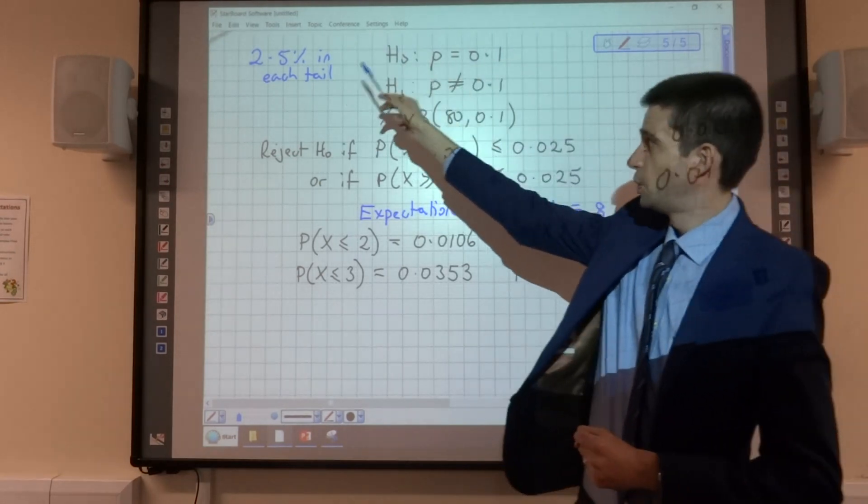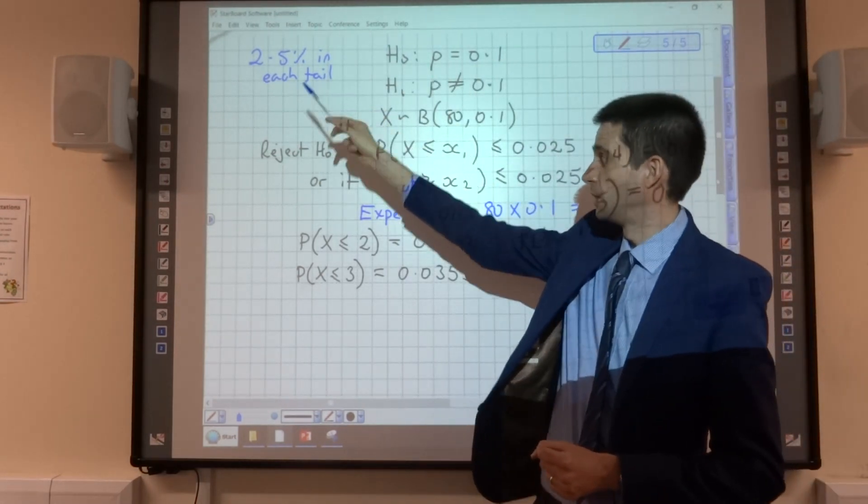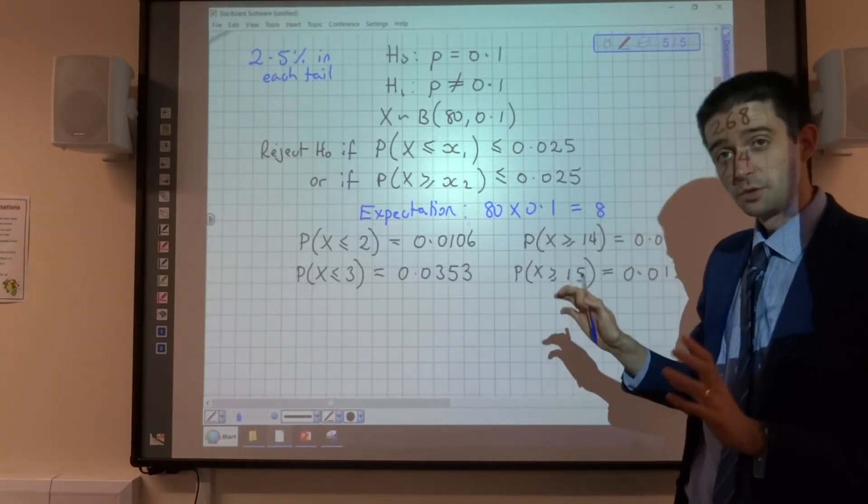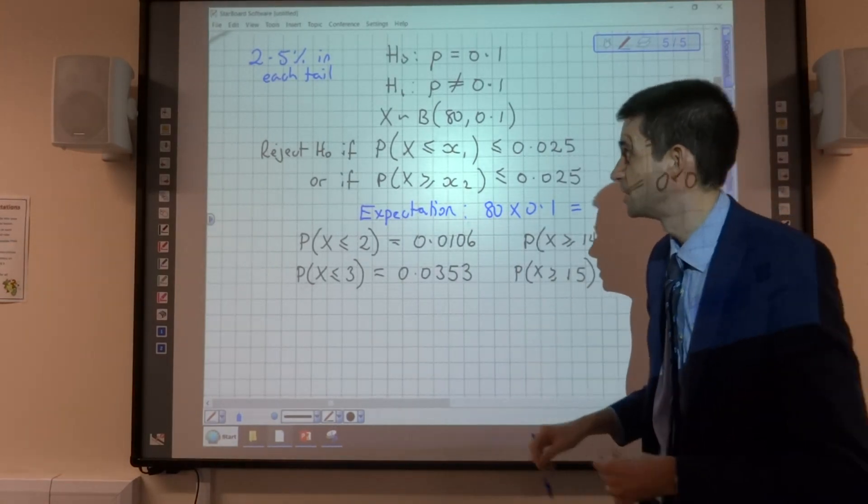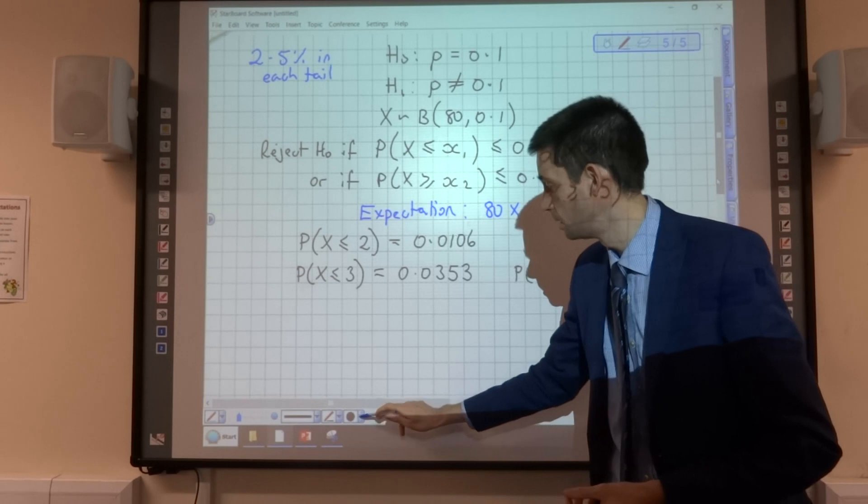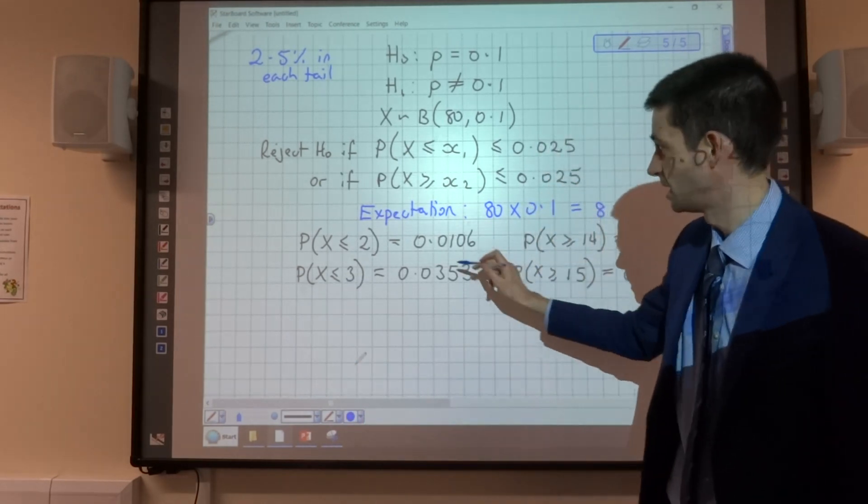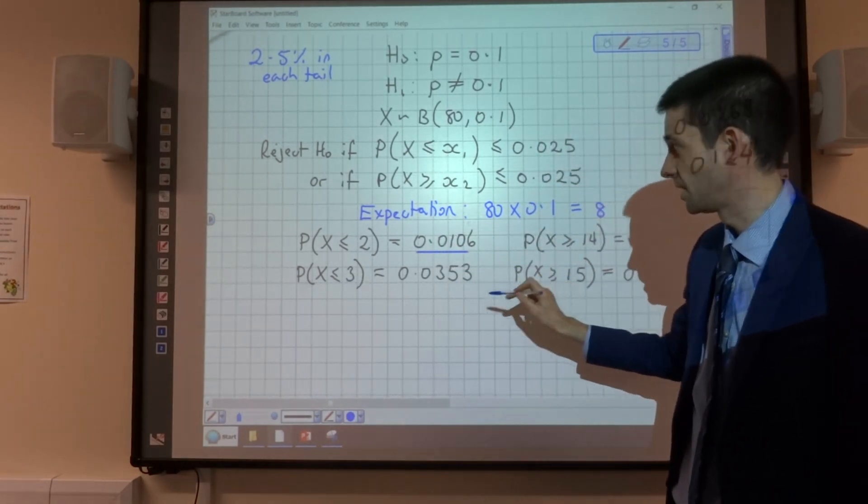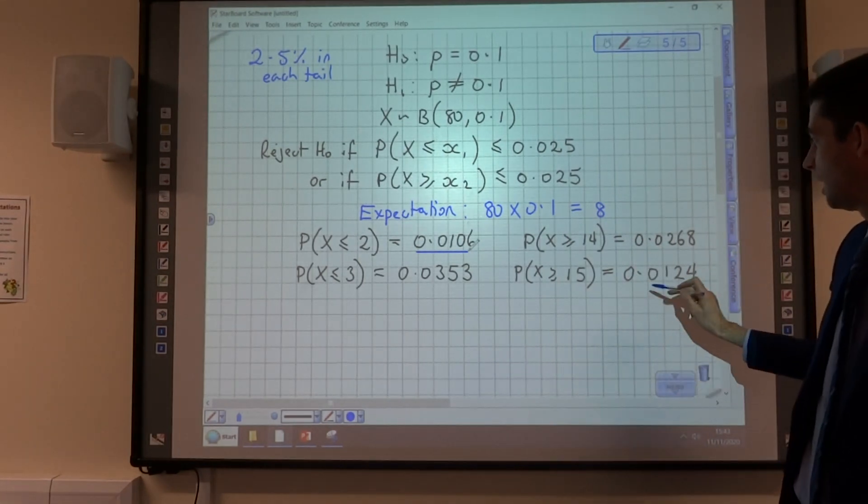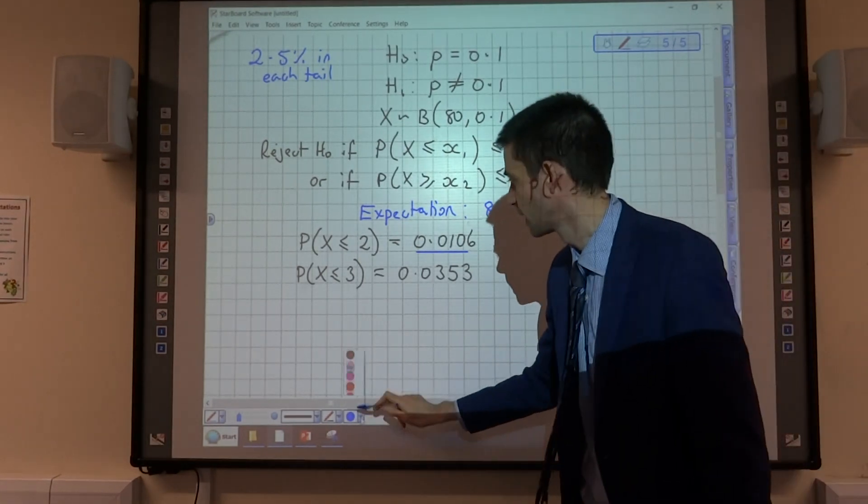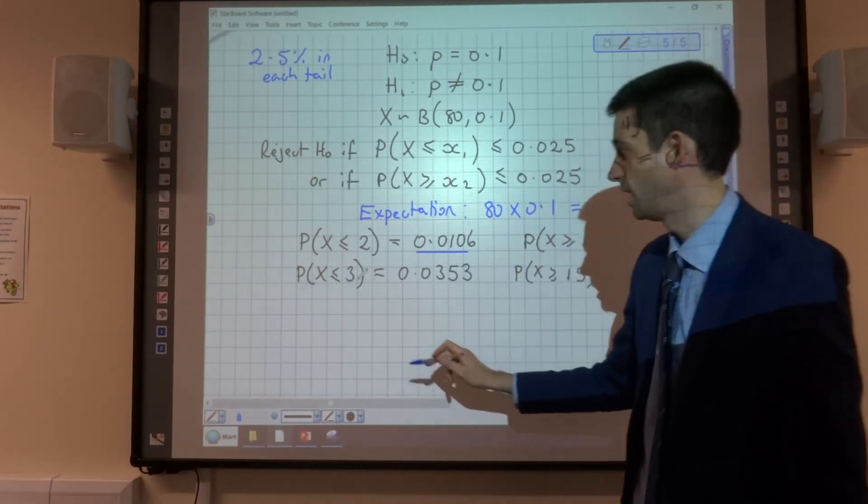And I'm just going to discuss what these values tell us. Now, 2.5% is the significance level in each tail. So if I was purely looking at that and saying my values have to be within that parameter 2.5%, I'd be saying, OK, that one's less than 2.5%, and this one is less than 2.5%.